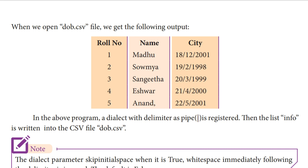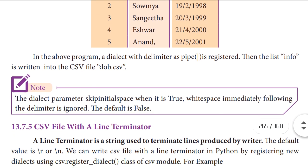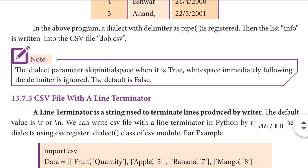Note: the dialect parameter skip_initial_space, when it is True, removes white spaces immediately following the delimiter. So white spaces immediately following the delimiter are ignored. The default value of skip_initial_space is False. If we want to enable it, we set it to True.